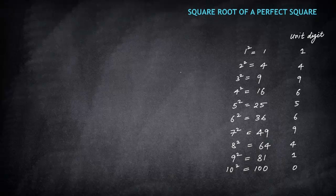If you notice, there is a fixed pattern in the unit digits — 1, 4, 9, 6, 5 are repeated in a definite pattern. Now let's start finding square roots.